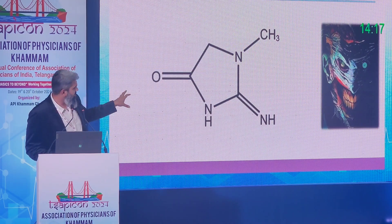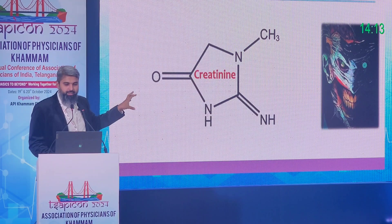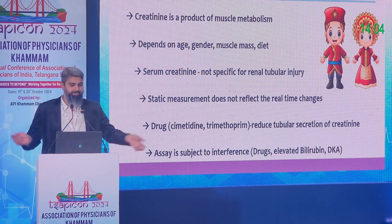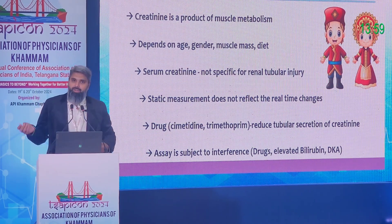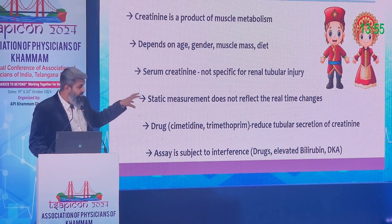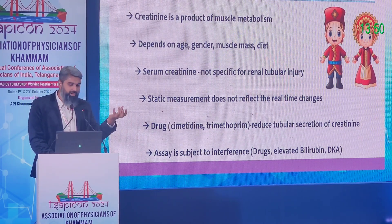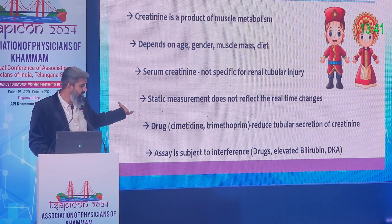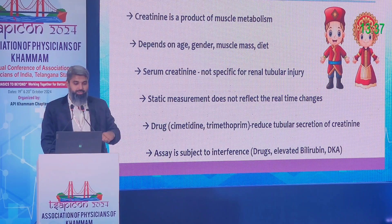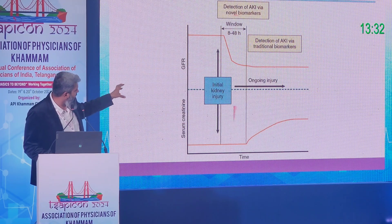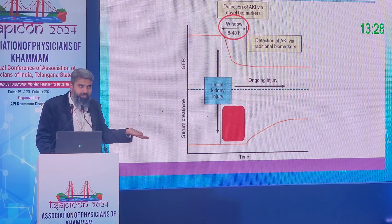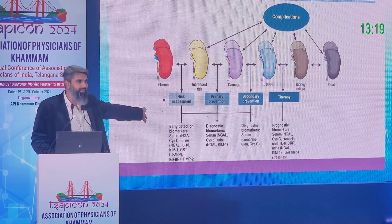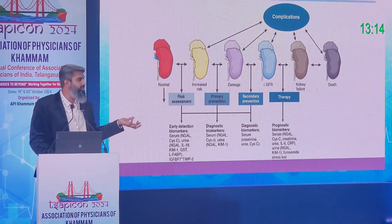Creatinine is not a good biomarker. It is produced from muscle, it is not continuous, and it depends on diet and hydration status. It cannot identify where the injury is happening — whether in the glomerulus, tubules, or interstitium. Certain drugs like trimethoprim and ranitidine can falsely elevate creatinine. It takes roughly 8 to 48 hours for creatinine to rise after injury — by then, the damage has already occurred.